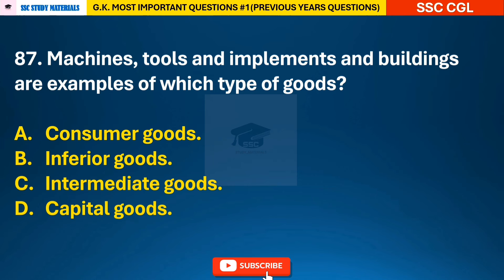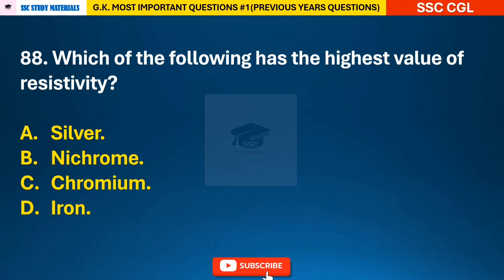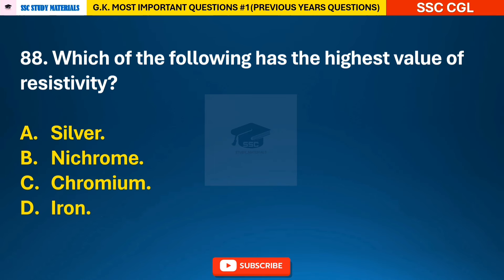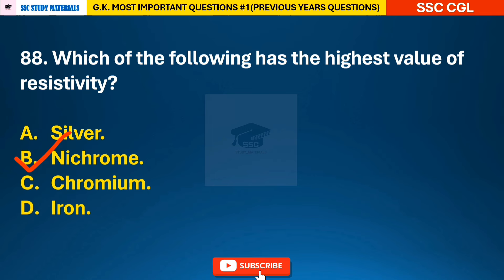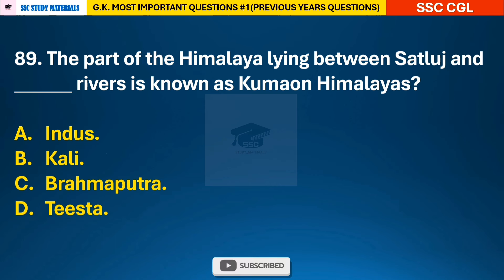Question 87: Machines, tools and implements, and buildings are examples of which type of goods? — answer D: capital goods. Question 88: Which of the following has the highest value of resistivity? — answer B: Nichrome.